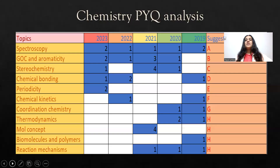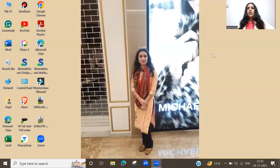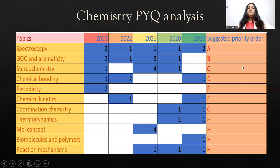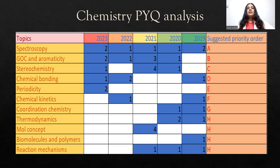These topics will be helpful for you to master chemistry questions in IIT JAM 2024. In this video I'm going to suggest you a priority order in which you should first complete these topics and later on complete the less important topics. This analysis is based on the previous five-year question papers.